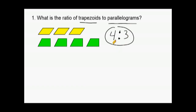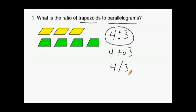A ratio can be stated with the two numbers separated with a colon, or with the word 'to', or with a fraction bar. But we should understand with this example — four to three is not a fraction. This is not four out of three. If this was four out of three, the bottom number would be a total, and it is not. This is a part-to-part ratio.